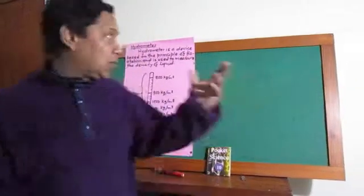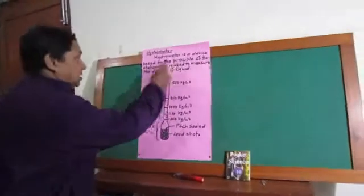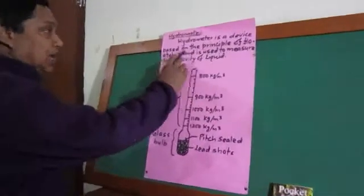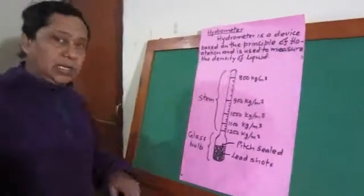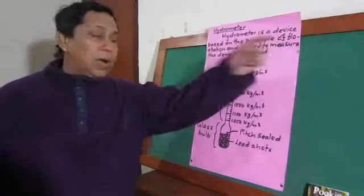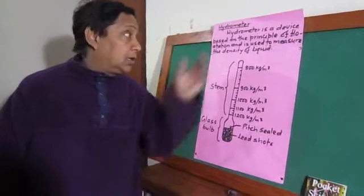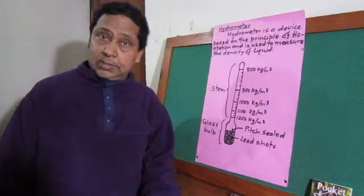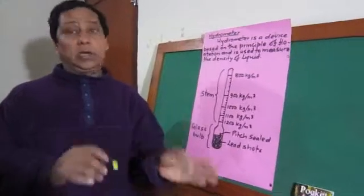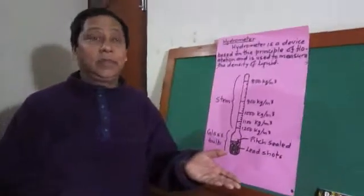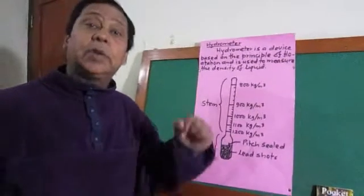We can define hydrometer this way. Hydrometer is a device based on the principle of flotation and it is used to measure density of the liquid. Do you remember what is the principle of flotation? This principle of flotation means every floating body displaces the liquid equal to its own weight. And it works on the principle of flotation.